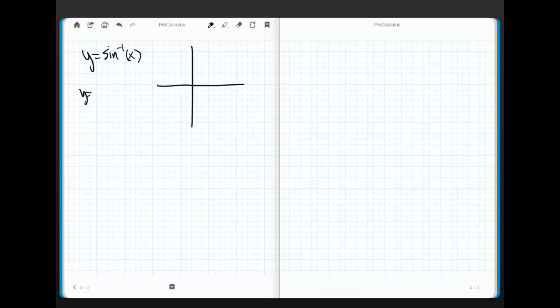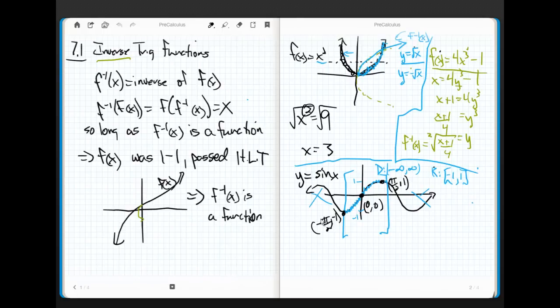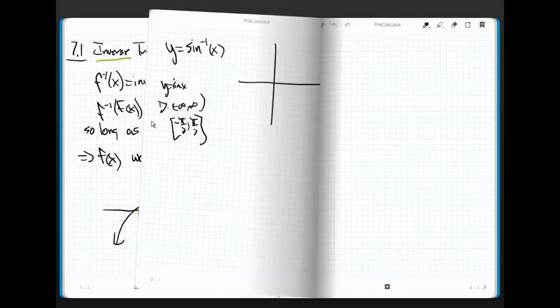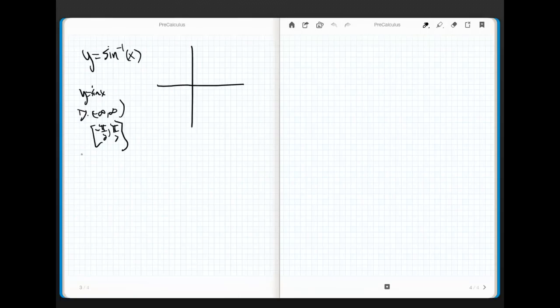Remember, for y equals sine of x, the domain is from negative infinity to infinity. But, we really only carved out between negative pi halves and pi halves, didn't we? Remember back here? We only grabbed the value from negative pi halves to pi halves. So, that's the part that we're stealing. That's the one-to-one part. That's the domain. The range is from negative one to one.